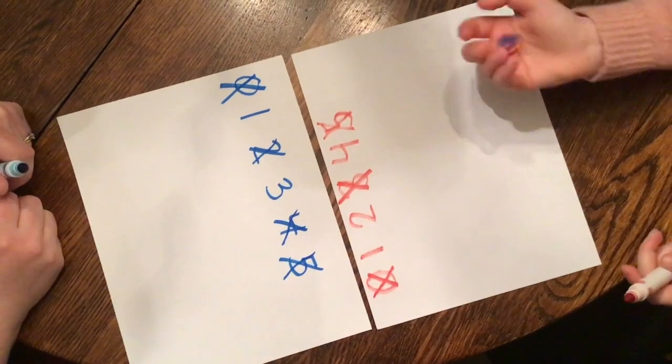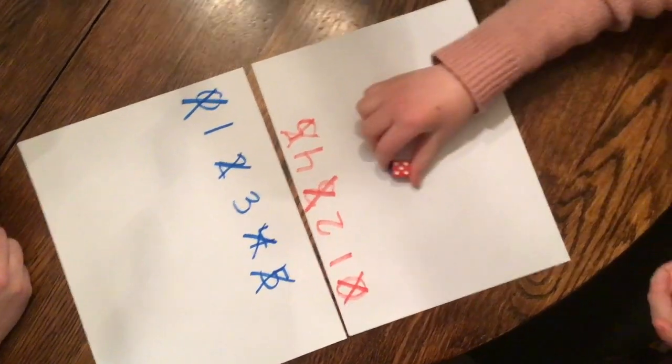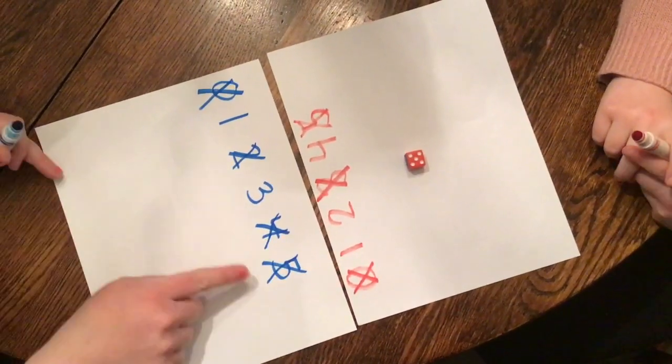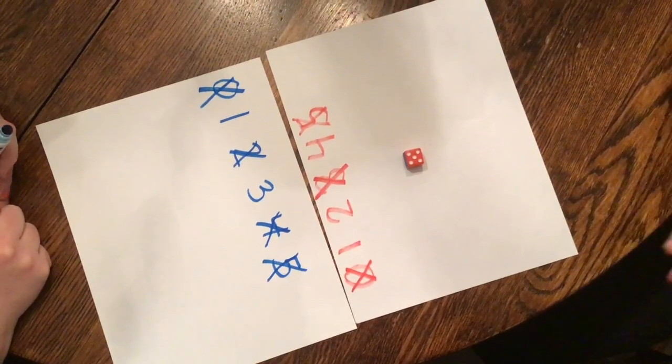So we could keep playing, but we're pretty sure you get the gist. The person who has them all crossed out first is the winner.